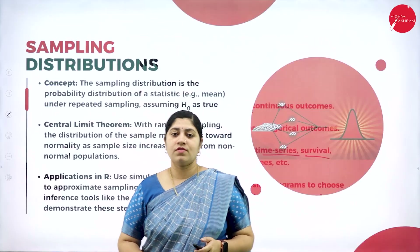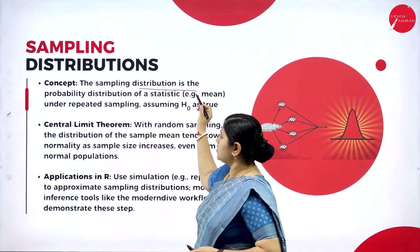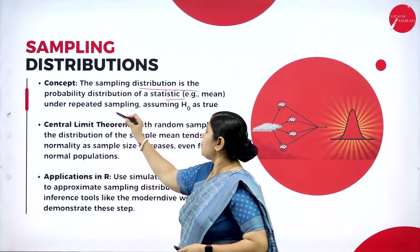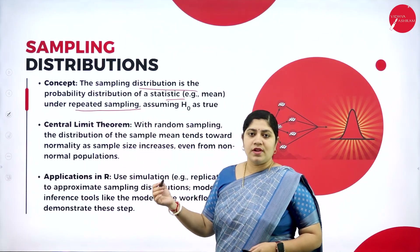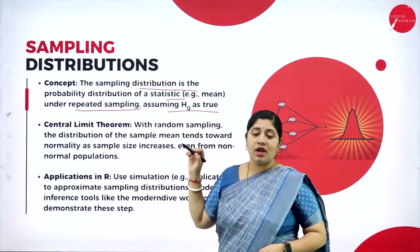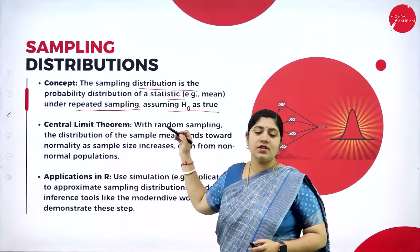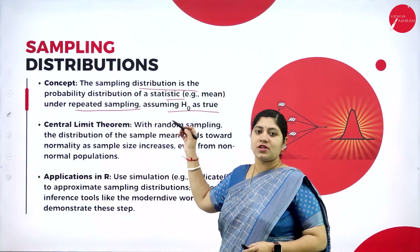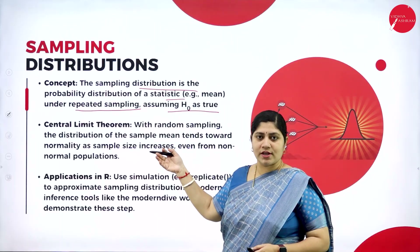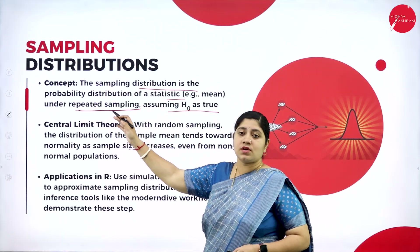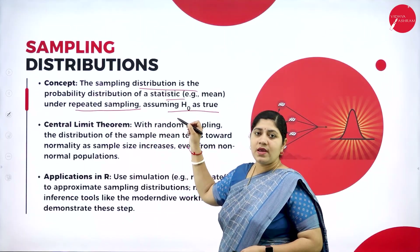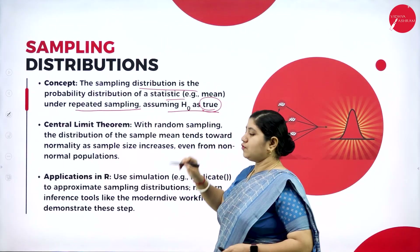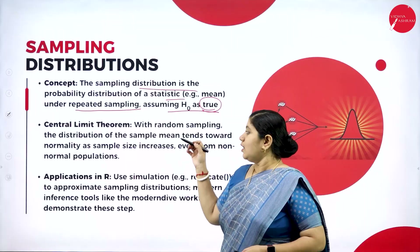Let's go forward with sampling distribution. Sampling distribution is the probability distribution of statistics under repeated sampling. Under repeated sampling, we will be assuming H0 is true — where H0 is nothing but the null hypothesis value. This null hypothesis will be discussed in upcoming slides.